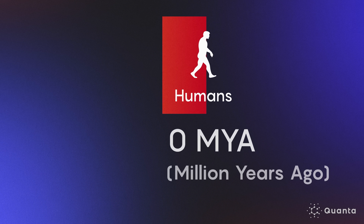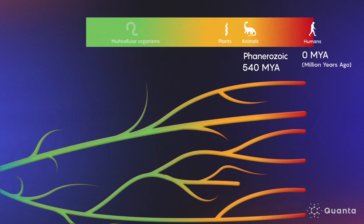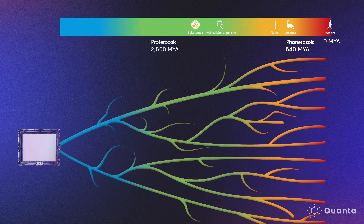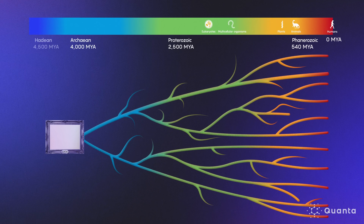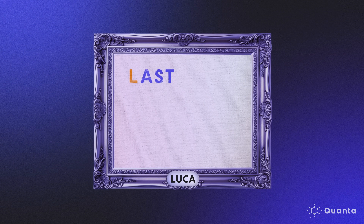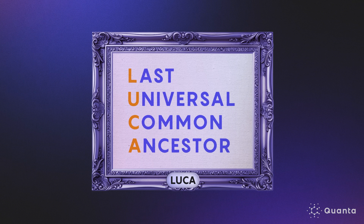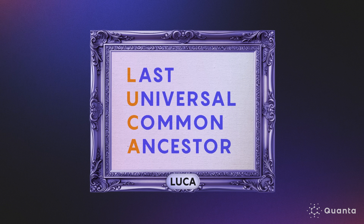You have an ancestor that lived billions of years ago, who goes by the name of Luca. Luca is the last universal common ancestor to all modern life on Earth.